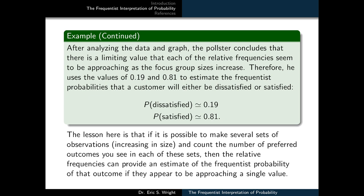The lesson here is that if it's possible to make several sets of observations, increasing in size, and then count the number of preferred outcomes you see in each of these sets, then the relative frequencies can provide an estimate of the frequentist probability of that outcome if they appear to be approaching a single value.